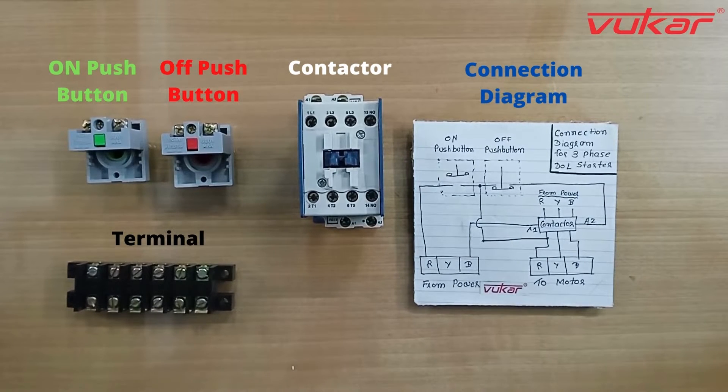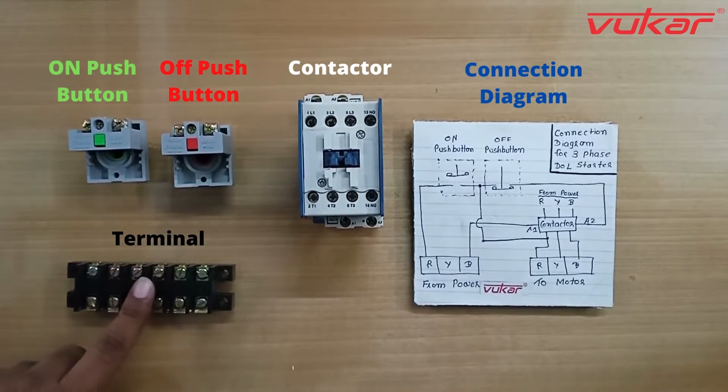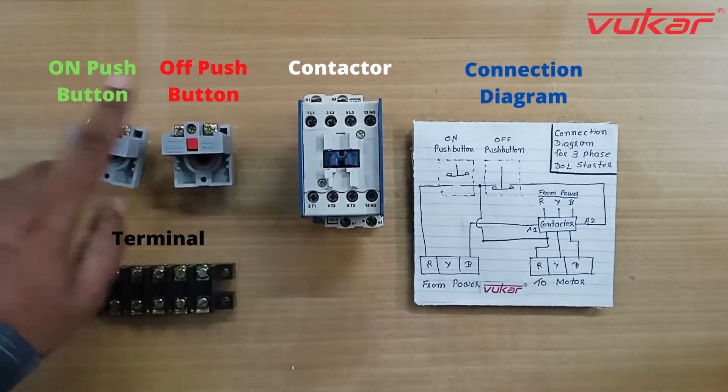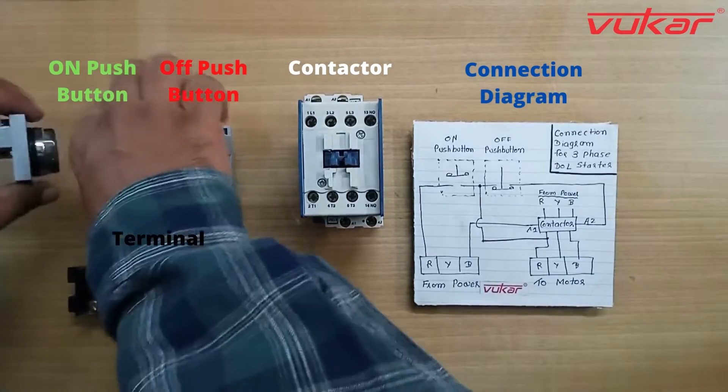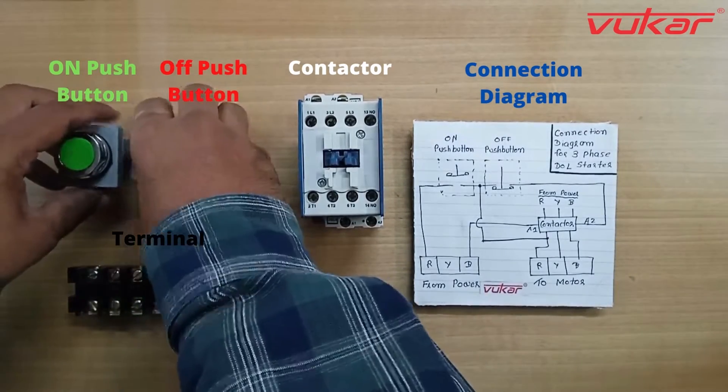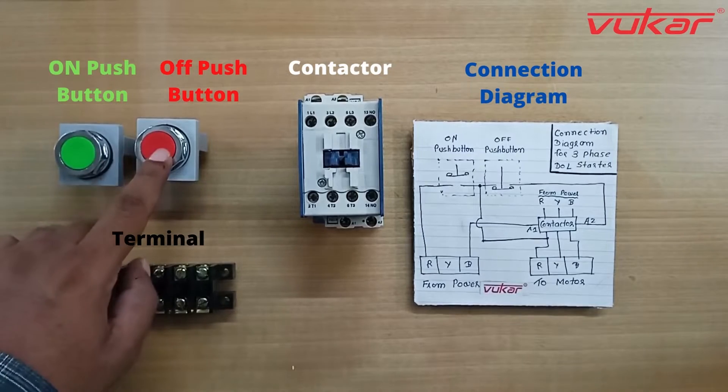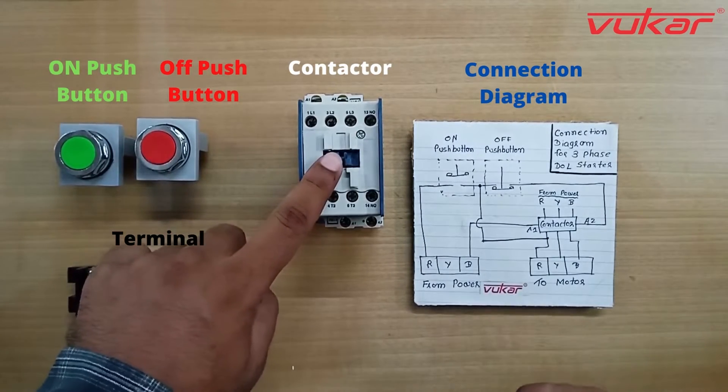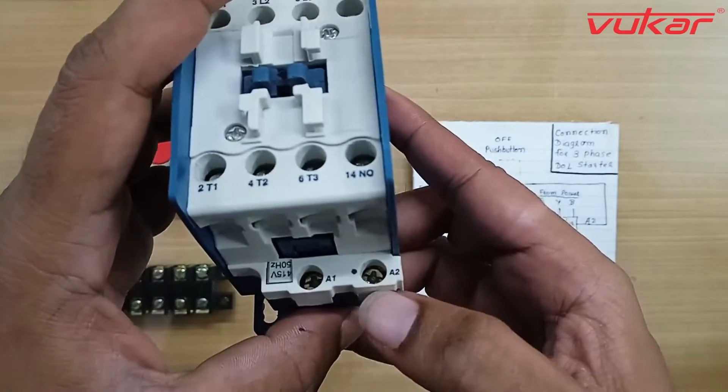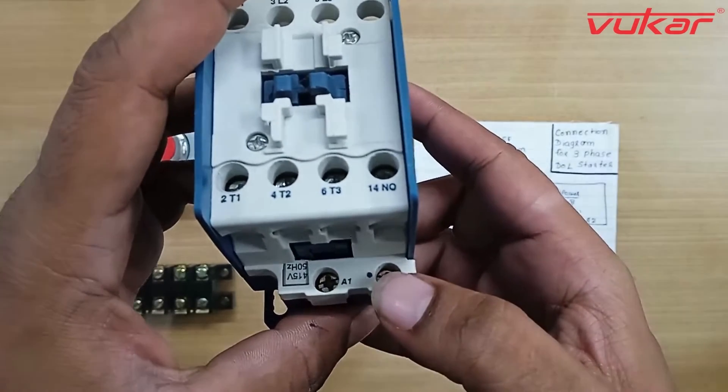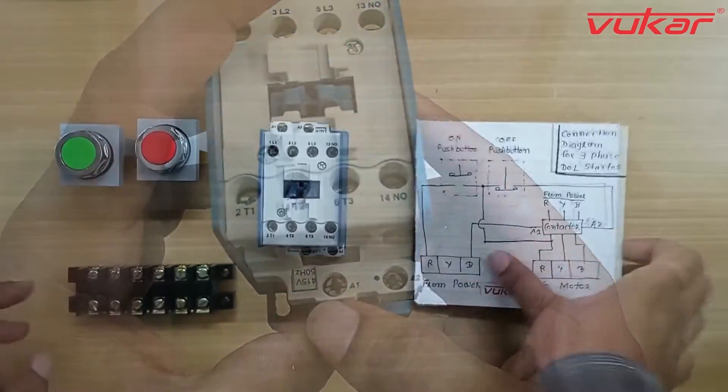Either we need to have a 2 3-pole terminal or a single 6-pole terminal. Then on-push button, then off-push button, a 3-pole contactor with 440 or 415 volt coil and connection wires.